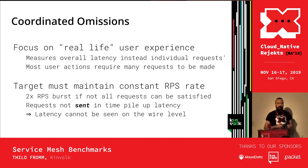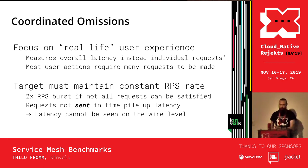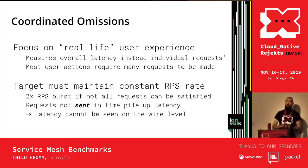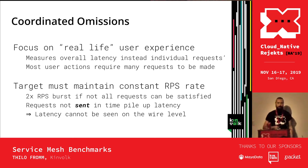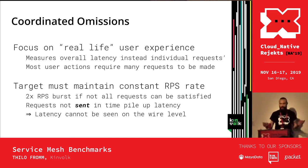Coordinated omission focuses on real-life user experience. It measures overall latency because the user action consists of multiple requests. The target must maintain a constant RPS rate by taking expectations into account for when a request would have been completed. That's why you can't see this latency at the wire level — if you just trace packets, you'll only see the request go out when it actually goes out.